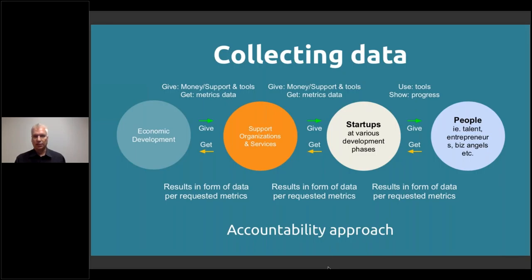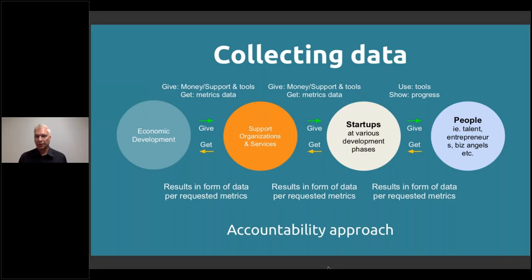The data collection has this accountability approach. There is a value chain that goes from economic development as a broader umbrella, contributing to support functions — both private and public — which then support companies and startups. Within those startups are individual people, whether they represent talent, entrepreneurs, co-founders, employees, or business angels. So if we put the segments here, we have the ecosystem level perspective, then support providers, then business creators.